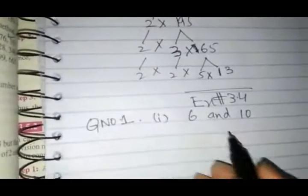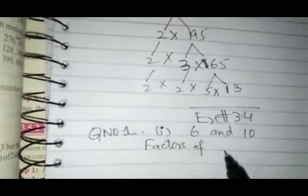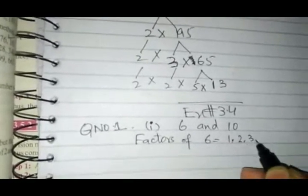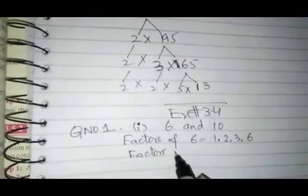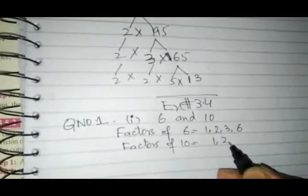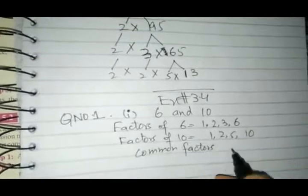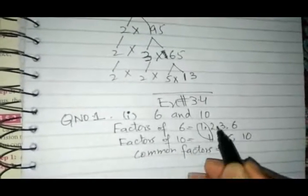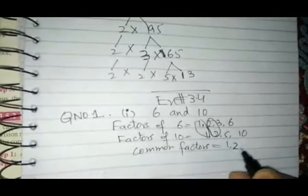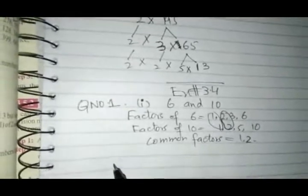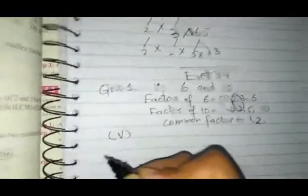The first part is 6 and 10. We have to find the factors of 6 and 10, and then write the common factors. Factors of 6 are: 1, 2, 3, 6. Factors of 10 are: 1, 2, 5. The common factors are 1 and 2. This is the solution. The next part is part number 5 — many parts you can do by yourself.